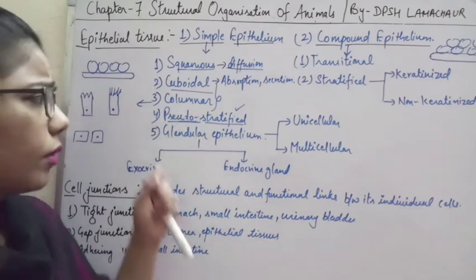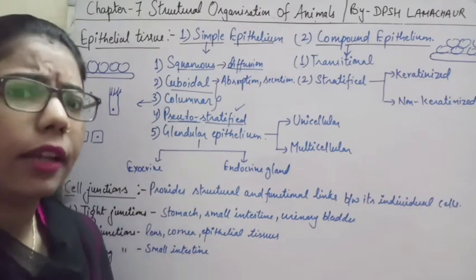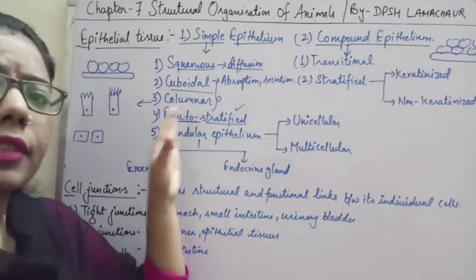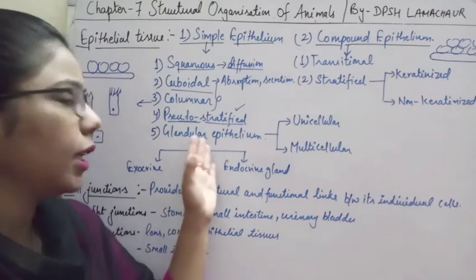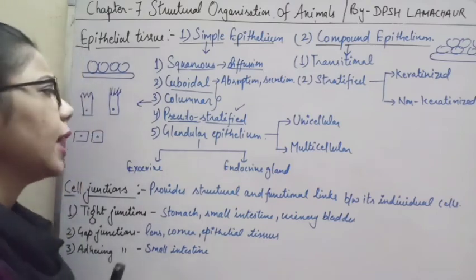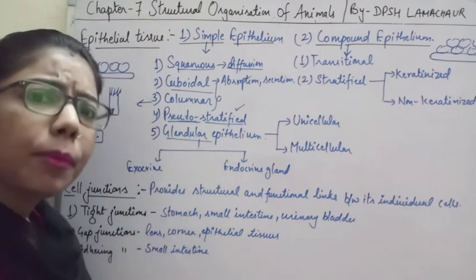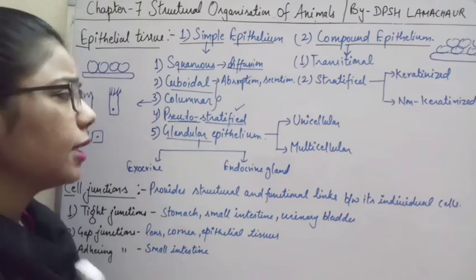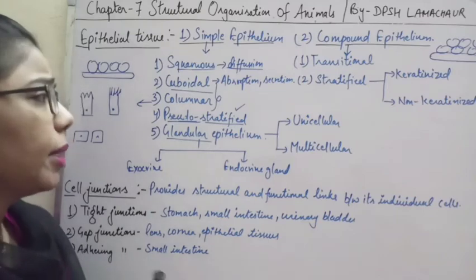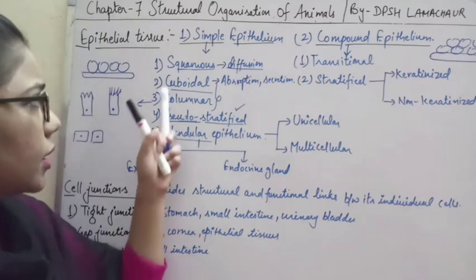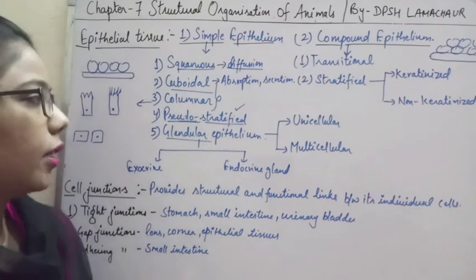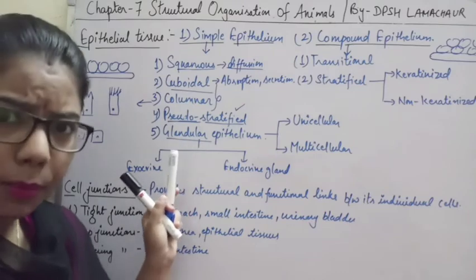The fifth type is glandular epithelium, which is a modification of cuboidal as well as columnar epithelial tissue. On the free surfaces of these tissues, glands are present. The function of glands — as the name indicates — is secretion, consistent with the secretory function of cuboidal and columnar epithelium.